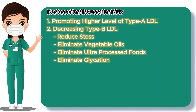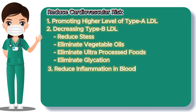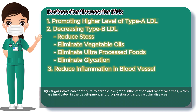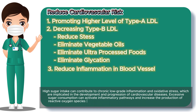After knowing the action plan for promoting higher type A LDL and decreasing type B LDL, don't forget to reduce inflammation in the blood vessels. High sugar intake can contribute to chronic low-grade inflammation and oxidative stress, which are implicated in the development and progression of cardiovascular diseases. Excessive sugar consumption can activate inflammatory pathways and increase the production of reactive oxygen species, leading to endothelial dysfunction, arterial stiffness, and atherosclerosis.